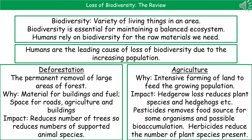A few ways that we're actually impacting on biodiversity. First one: deforestation. Deforestation is the permanent removal of large areas of forest. The reason that we're doing this is to get the materials we need for building, for fuel, to create space for new buildings and roads. The big downside is that it's going to reduce the number of trees, which means we reduce the number of supported animal species.